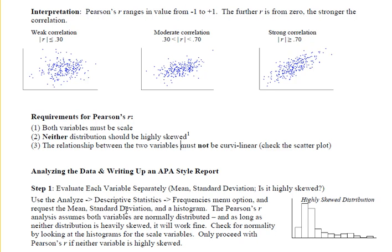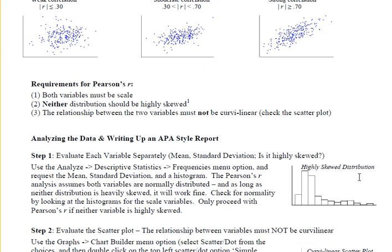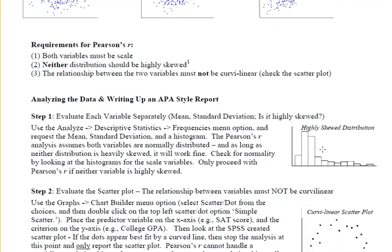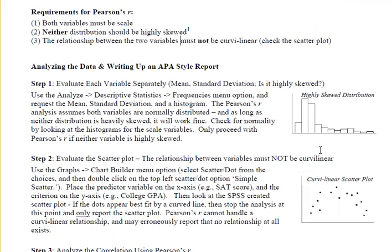Okay, so what did we do as a review? We used the Analyze drop-down menu, chose Descriptive Statistics and then Frequencies. From there, we requested the mean, standard deviation, and also histogram. We made sure that neither of the variables was highly skewed, and we also now know the mean and standard deviation to report later on.